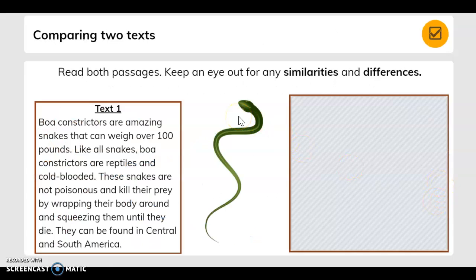Compare two texts. Read both passages. Keep an eye out for any similarities and differences. Text 1. Boa constrictors are amazing snakes that can weigh over 100 pounds. Like all snakes, boa constrictors are reptiles and cold-blooded. These snakes are not poisonous and kill their prey by wrapping their bodies around and squeezing them until they die. They can be found in Central and South America.